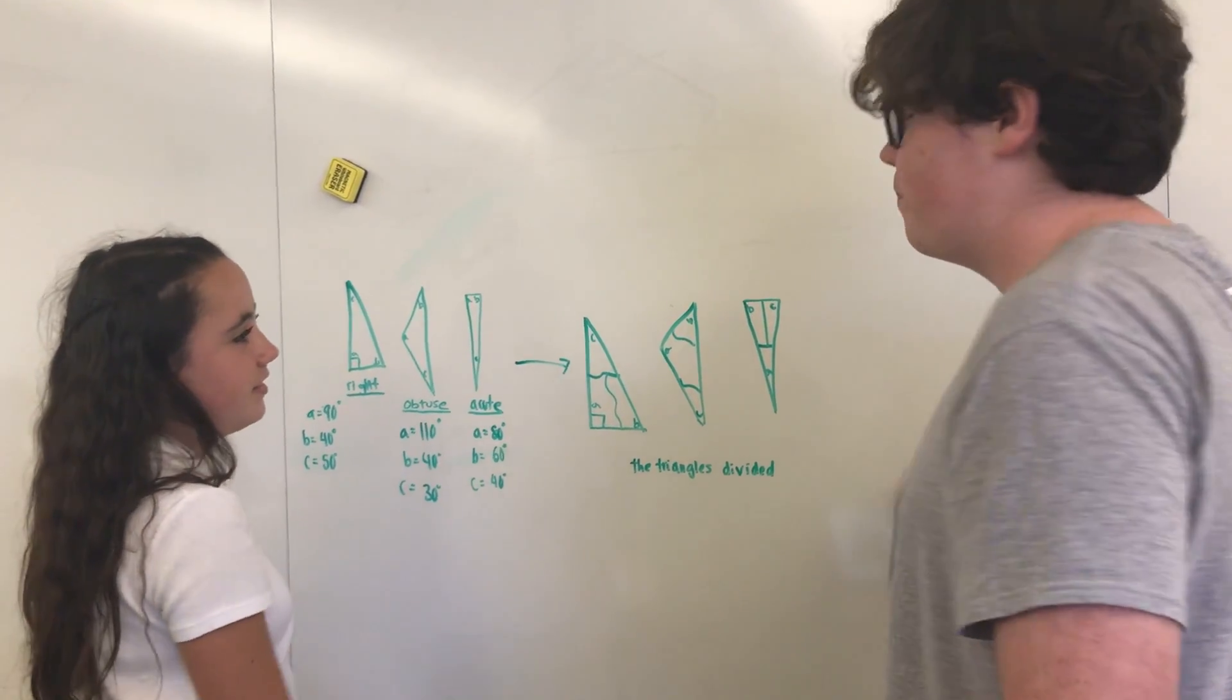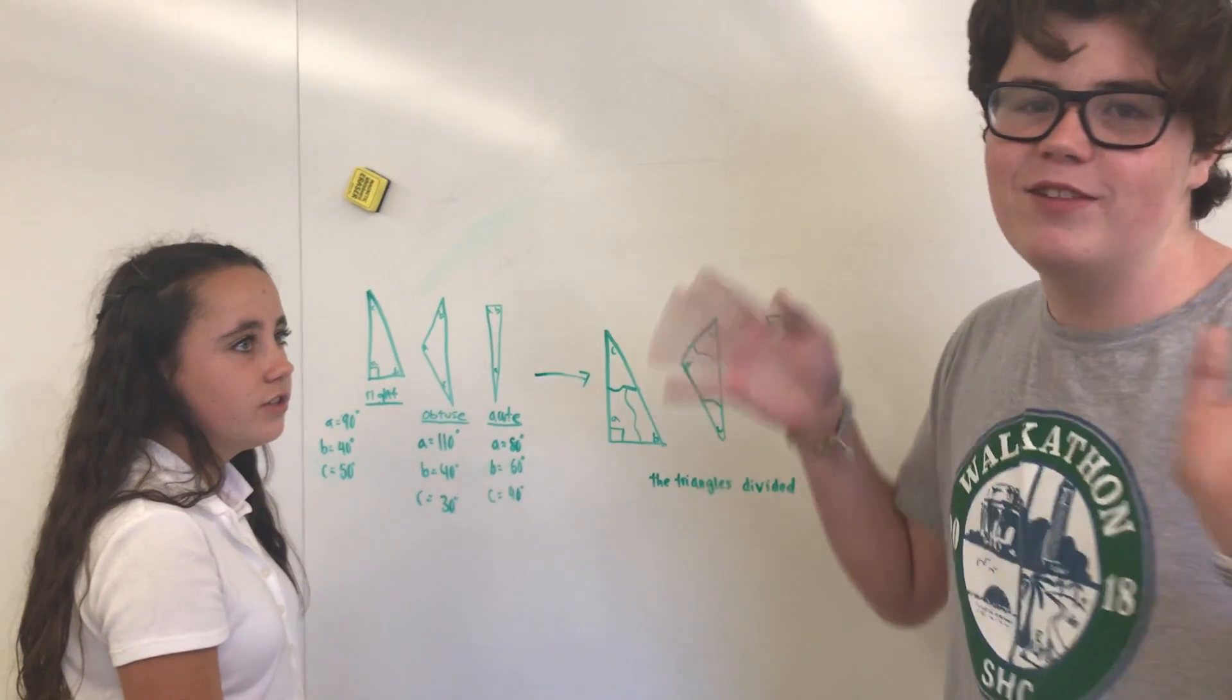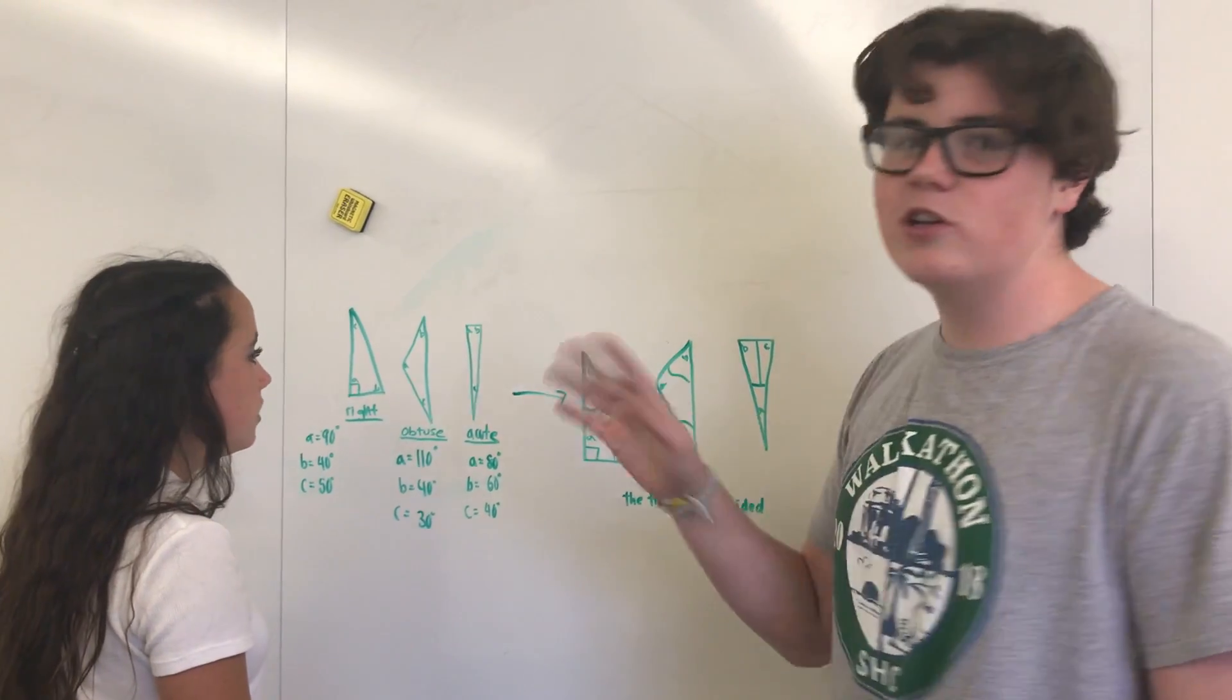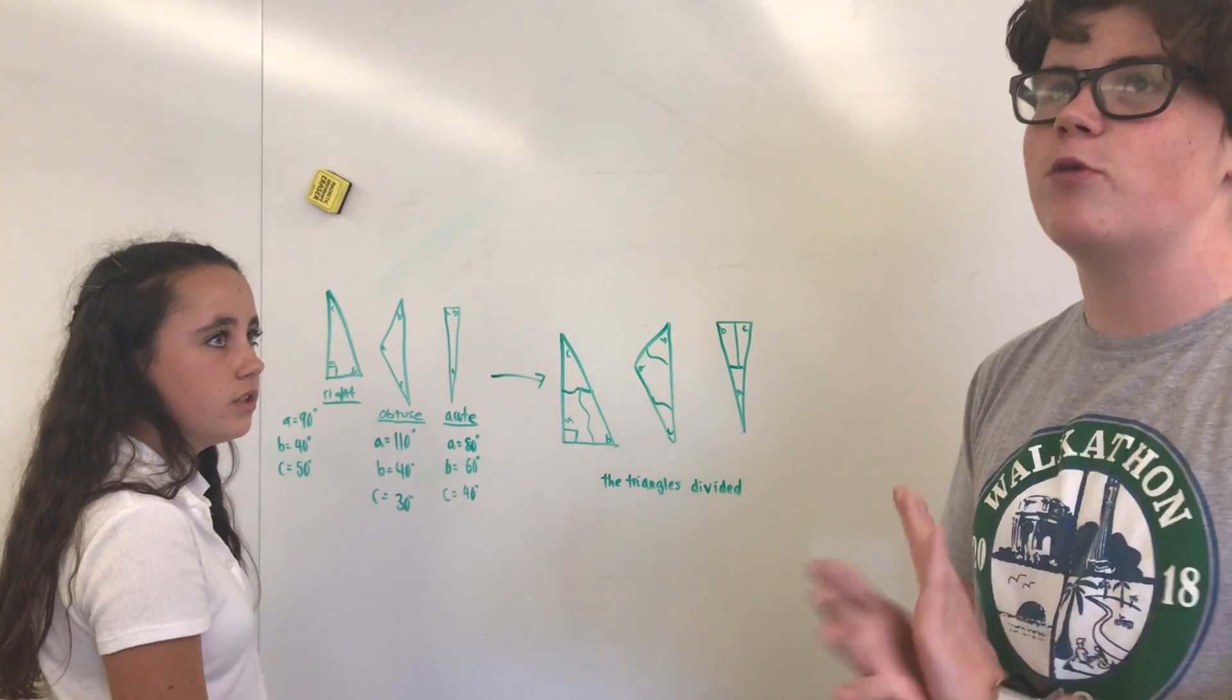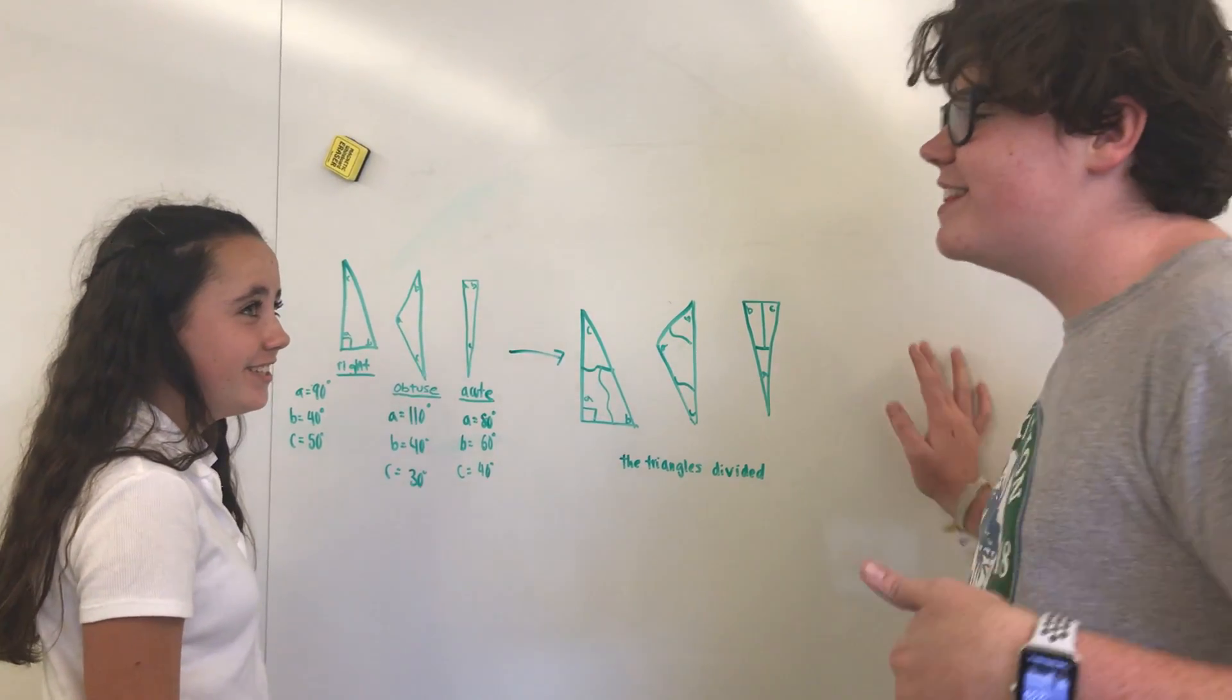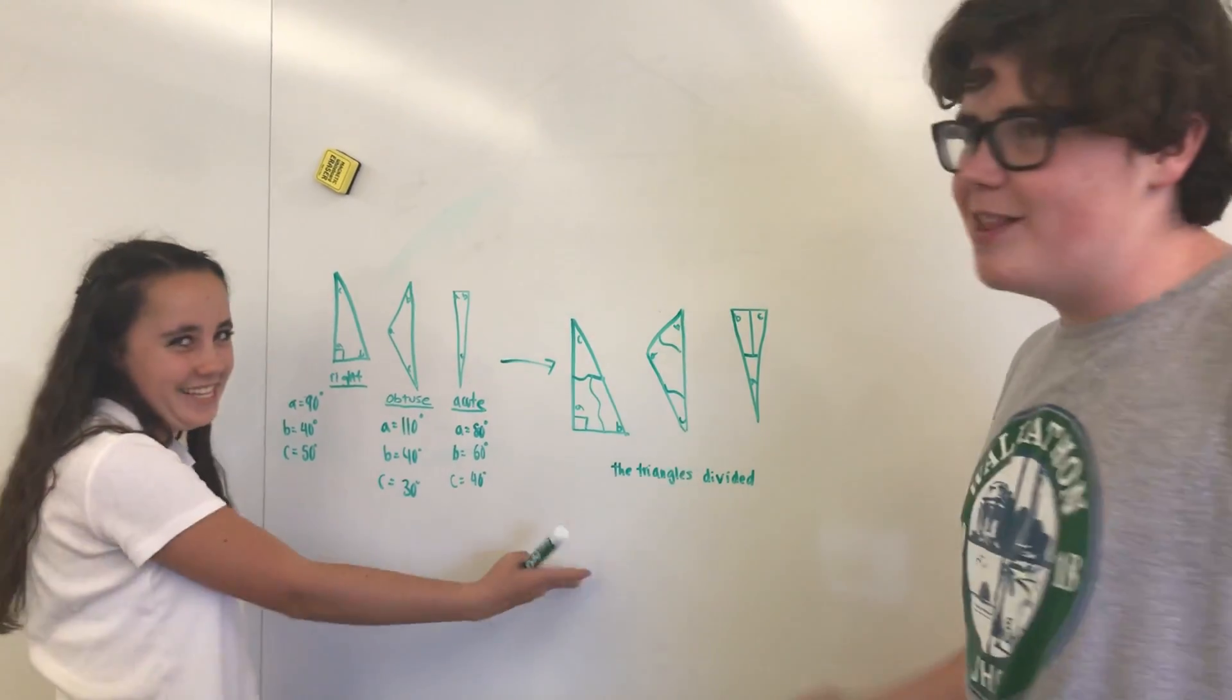We set out to prove that it still equals 180 degrees, even though it's all split up. Every single triangle in existence equals 180 degrees, no matter what, which is why we tested that theory and split them up.